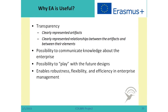Let us discuss why Enterprise Architecture is useful. As you saw in the previous part, Enterprise Architecture is represented with clear artifacts which show what we know about the Enterprise. These artifacts are constructed so that we can see relationships between them, as well as relationships between elements inside the artifacts. One thing we can achieve by this is transparency, and with this transparency and graphical representations of knowledge, it is easier to communicate knowledge about the Enterprise, which is very important when making decisions about strategies or operational changes.